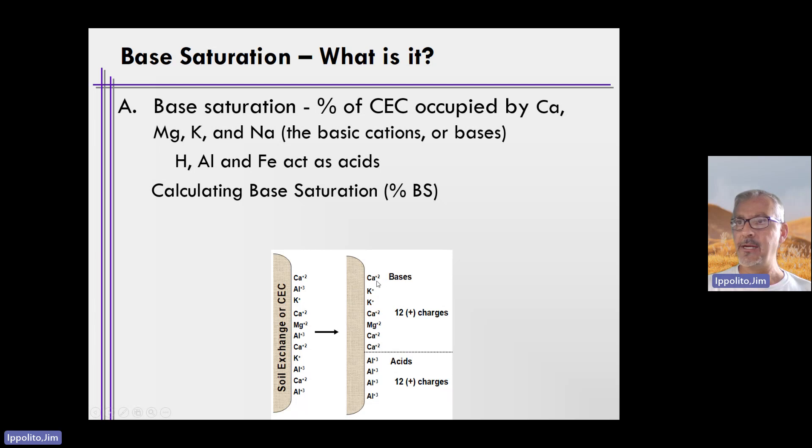If we split these charges into the bases or basic cations and the ones that generate acidity, and then we added up the charge, we would note that there's 12 positive charges with respect to the basic cations and 12 positive charges with respect to the cations that can generate acidity.